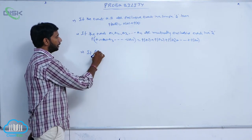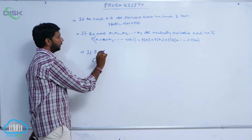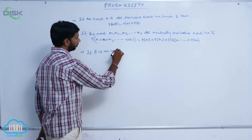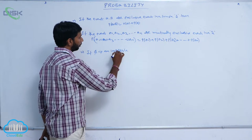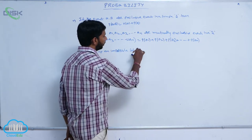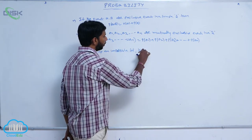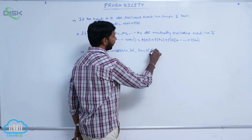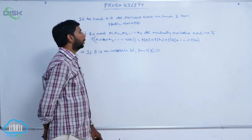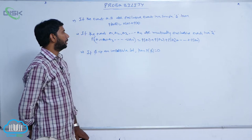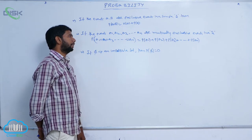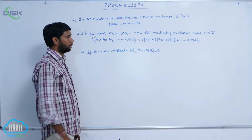If phi is an impossible set, then the probability of the empty set is equal to 0.